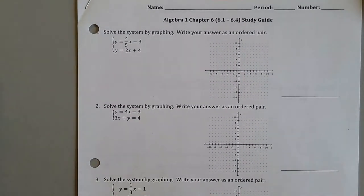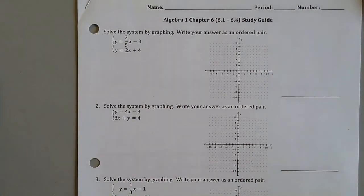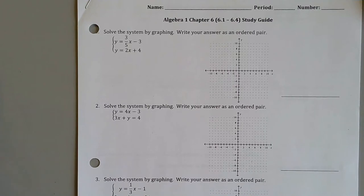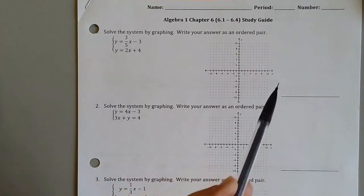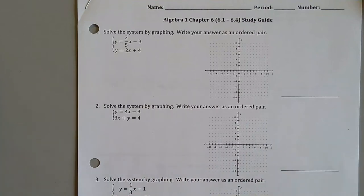All right, question number one, we have to solve the system by graphing. So you need to graph it. In class, a lot of students were just going ahead and using substitution or elimination. On the test, I need to see our lines graphed and then the point where they meet.